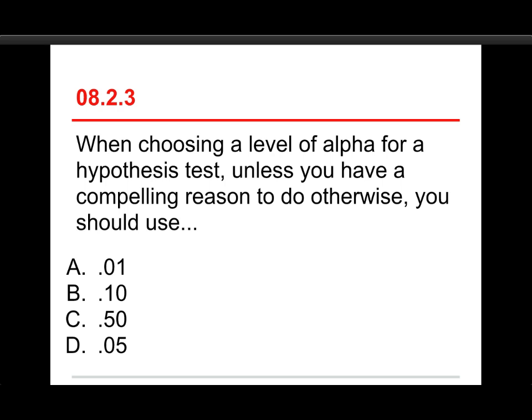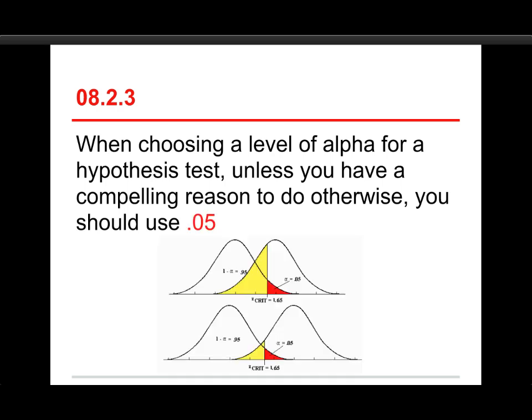Number three, when choosing a level of alpha for a hypothesis test, unless you have a compelling reason to do otherwise, you should use 01, 10, 50, or 05. Well, the answer for this one is 05, and this is the false positive rate, the type 1 error rate. And let's just take a look.